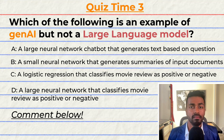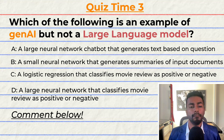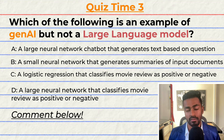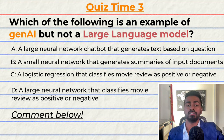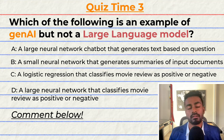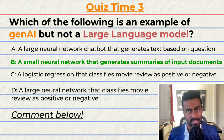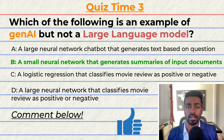Quiz time! This is going to be a fun one. Which of the following is an example of Gen AI but not a large language model? A: a large neural network chatbot that generates text based on a question. B: a small neural network that generates summaries of input documents. C: a logistic regression that classifies a movie review as positive or negative. Or D: a large neural network that classifies a movie review as positive or negative. Note that multiple options may be correct. The correct option is B. But can you tell me why? Comment your reasoning down below and let's have a discussion. At this point, if you do think I deserve it, please do consider giving this video a like. That's going to do it for quiz time and pass three of this video.